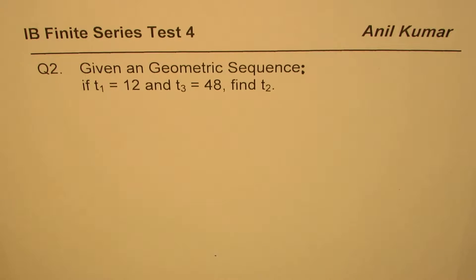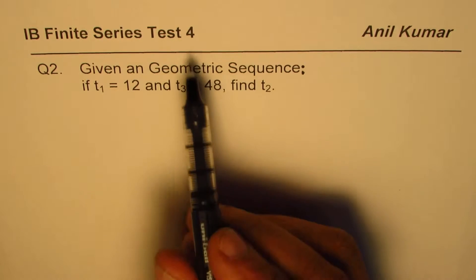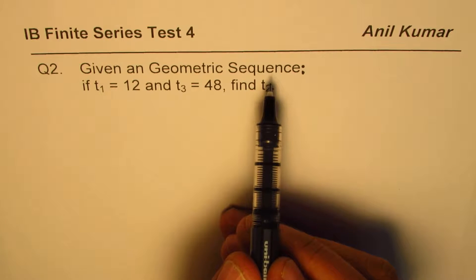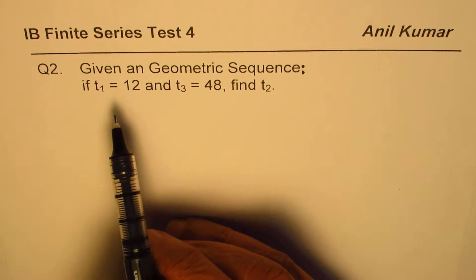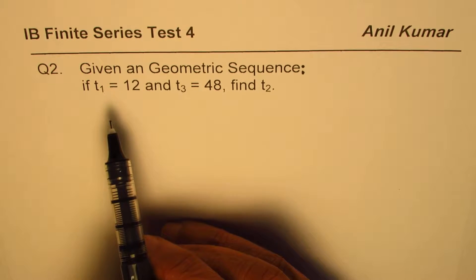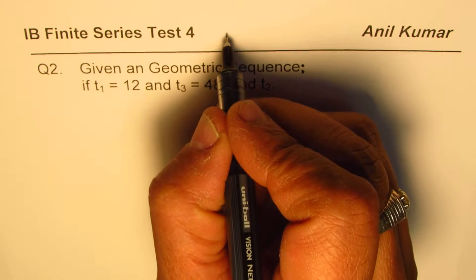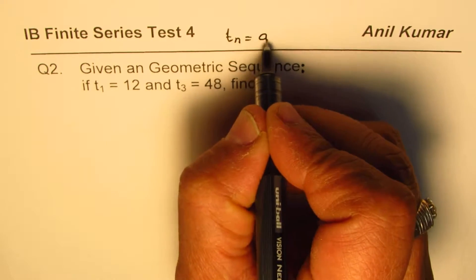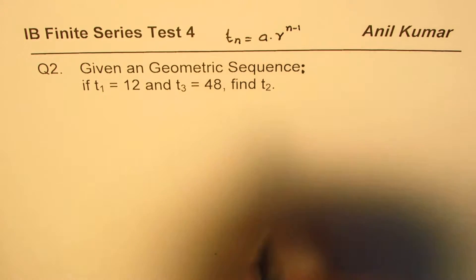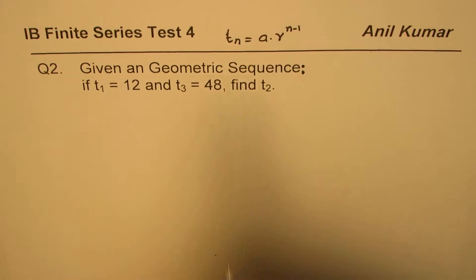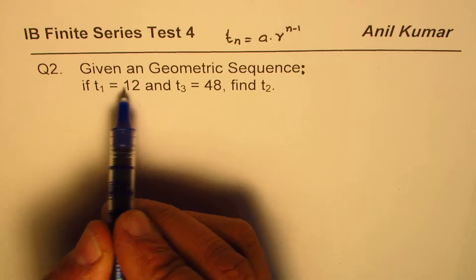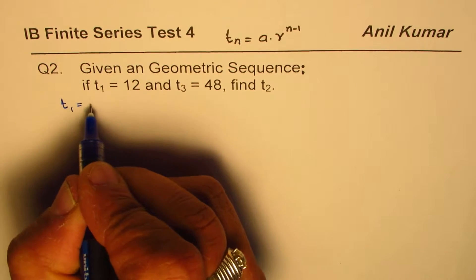When we talk about geometric sequence, it starts with the first term which we call t1, normally written as 'a', and the next term is multiplied by a factor which we call 'r'. The general formula is tn equals a times r to the power of n minus 1. Fortunately, there is just one formula to remember for geometric sequences.